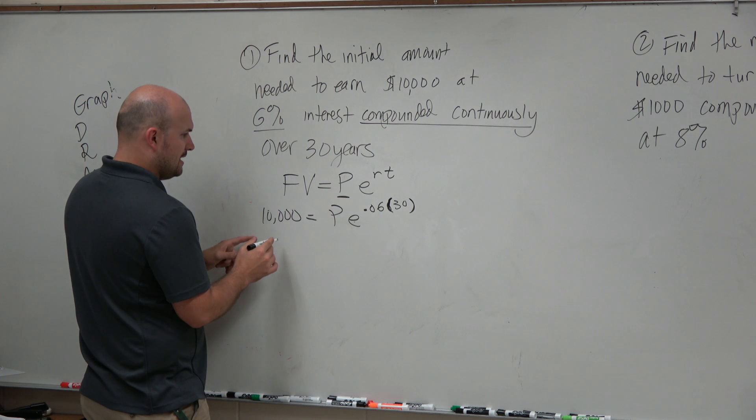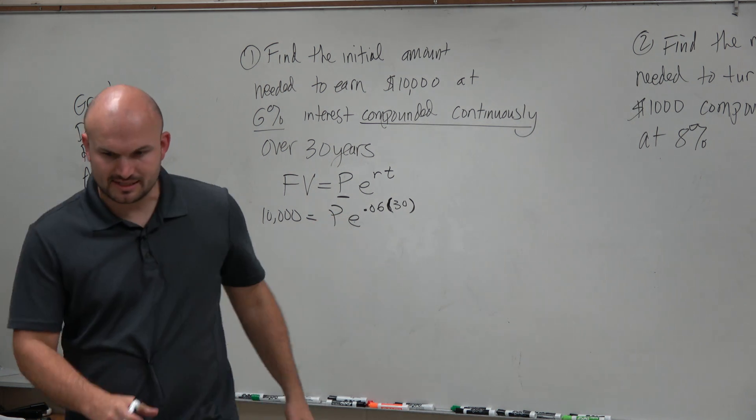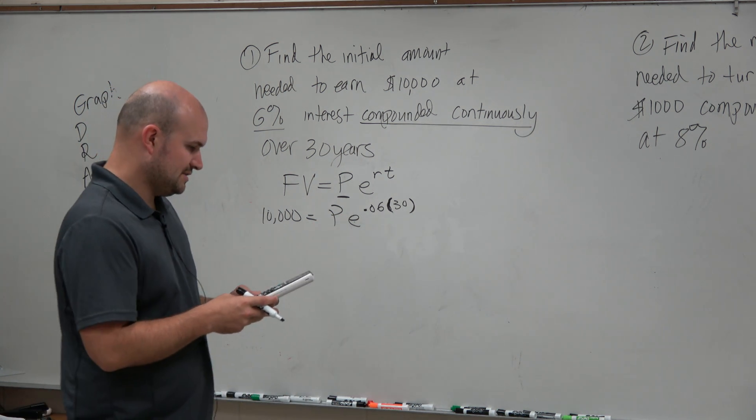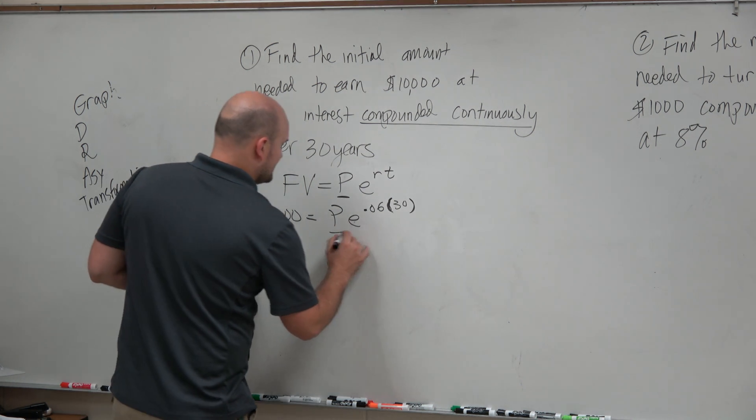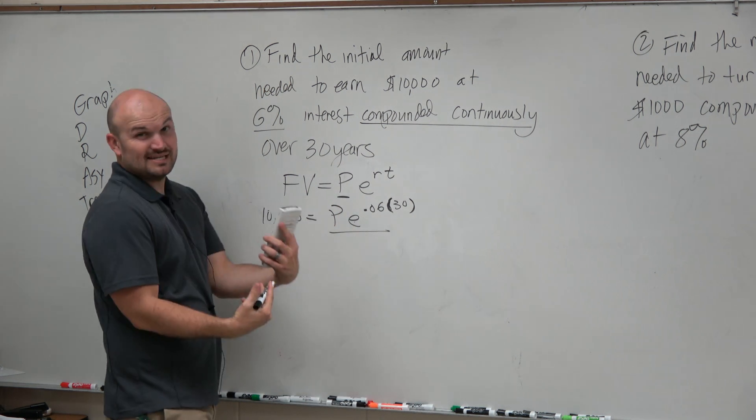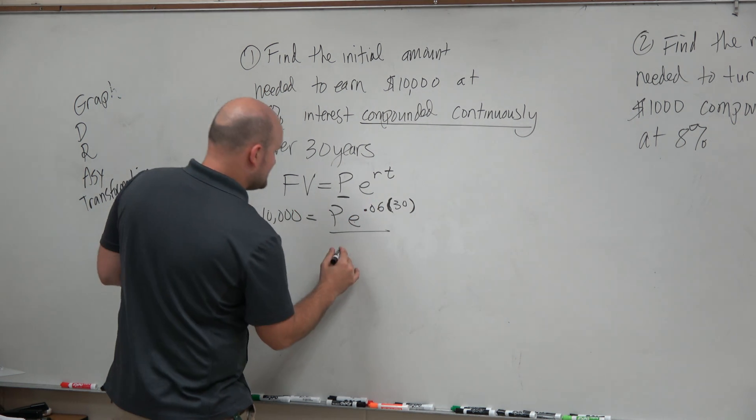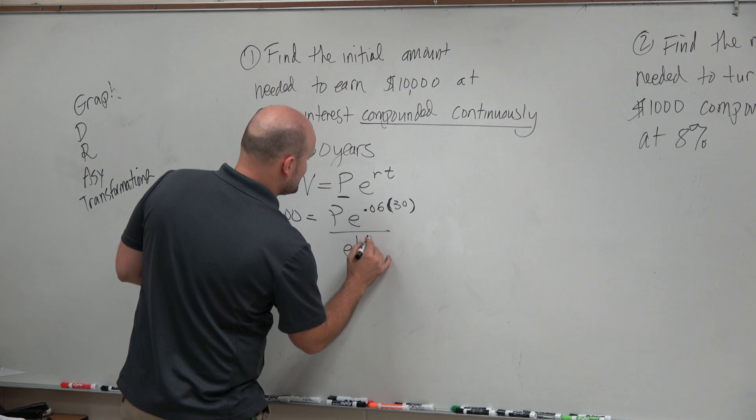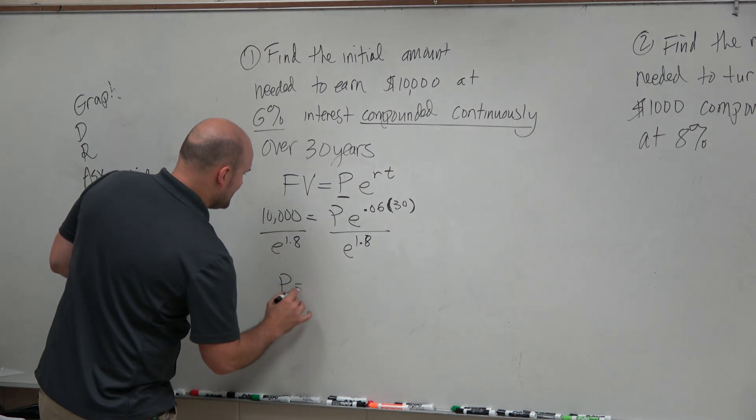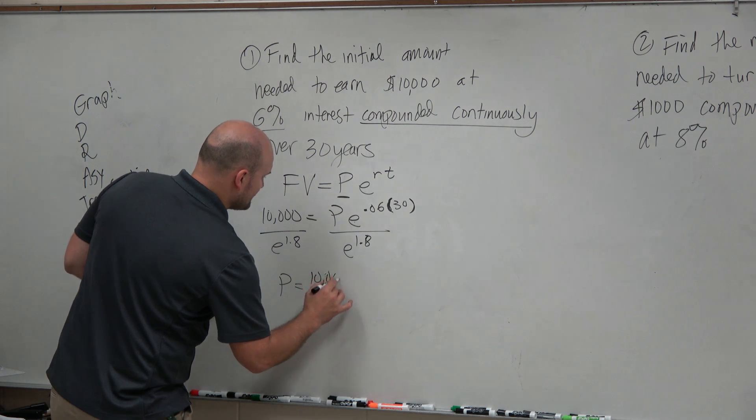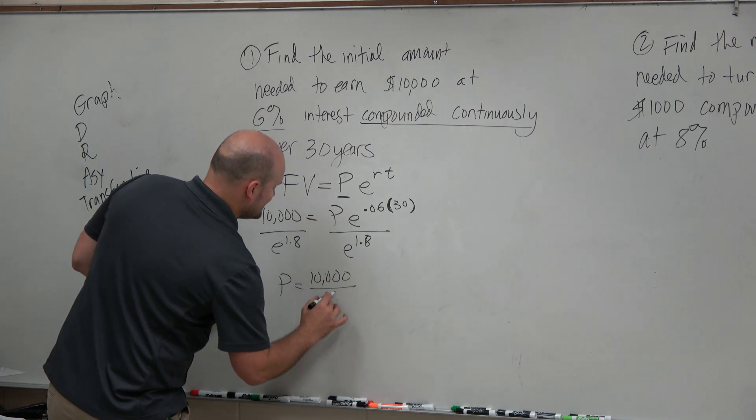So now what we're going to do is simplify 0.06 times 30, which is 1.8. So I'm going to divide by E. Now remember, E is a number, so it's E raised to the 1.8. I'm going to divide by E to the 1.8 on both sides. Therefore, my present value equals 10,000 divided by E to the 1.8.